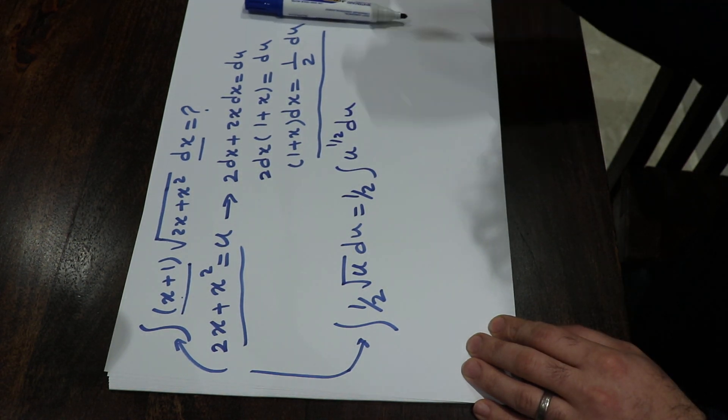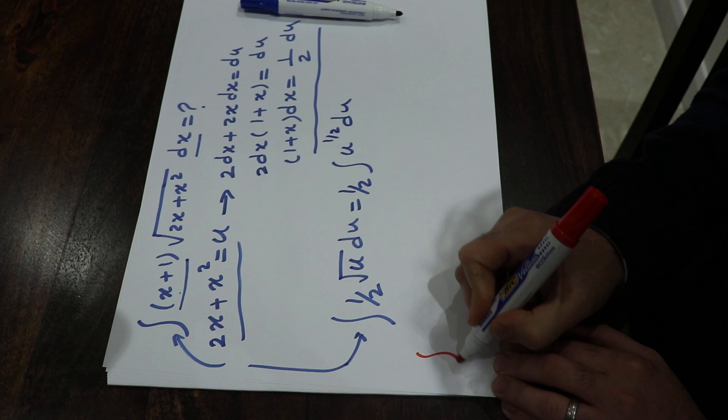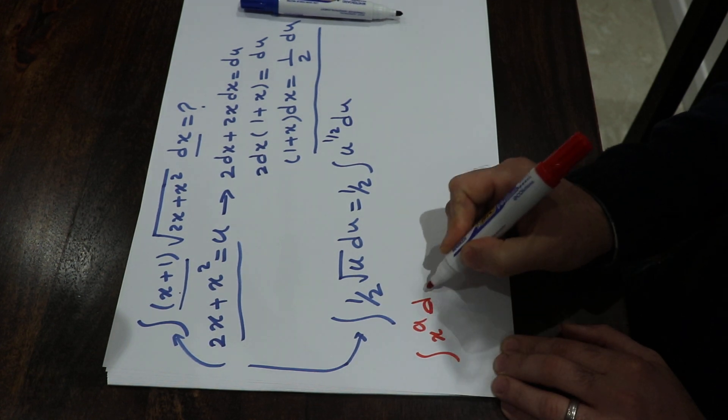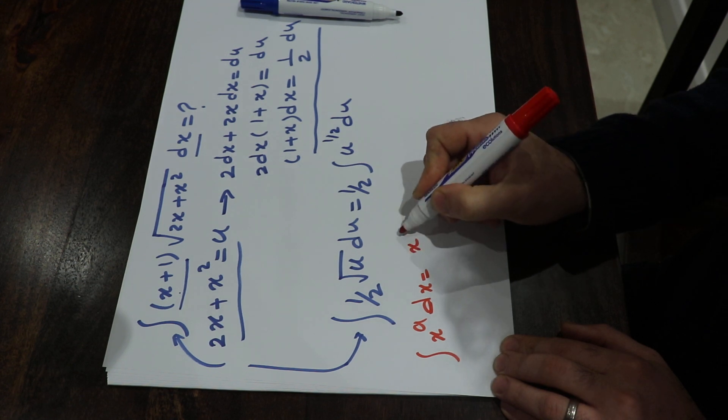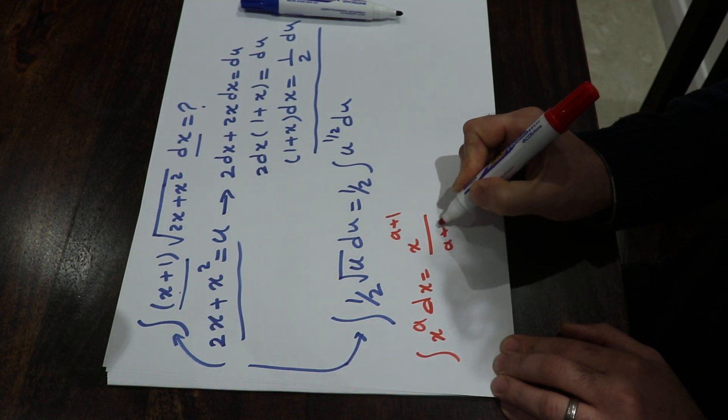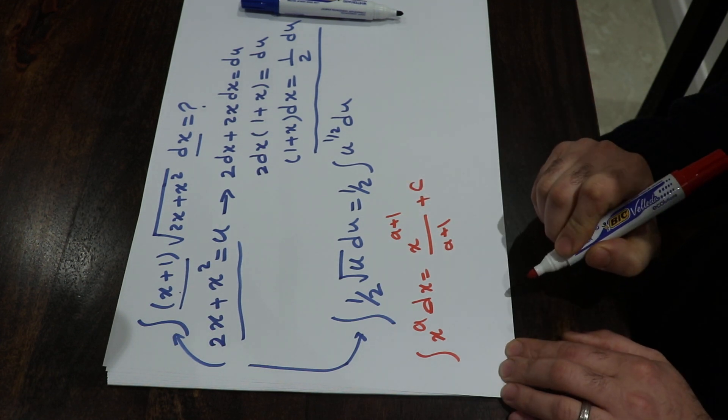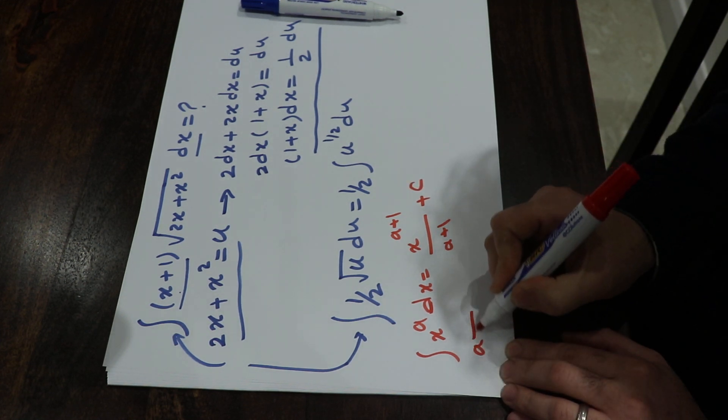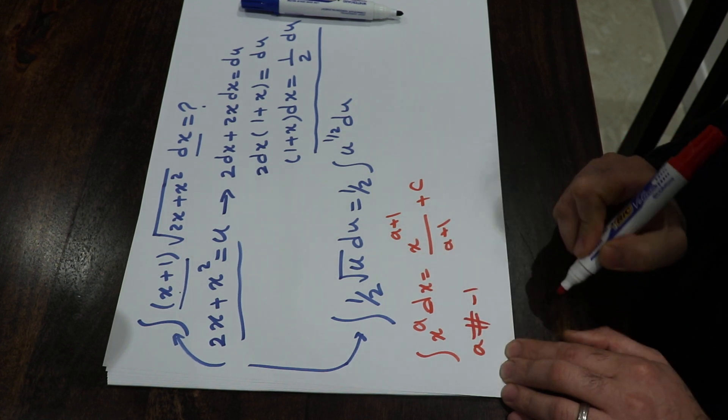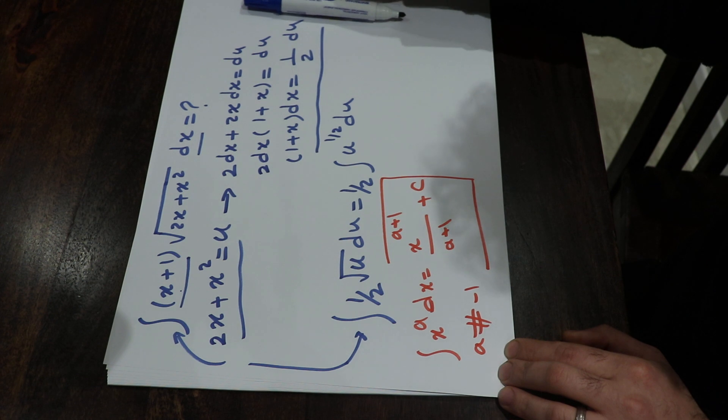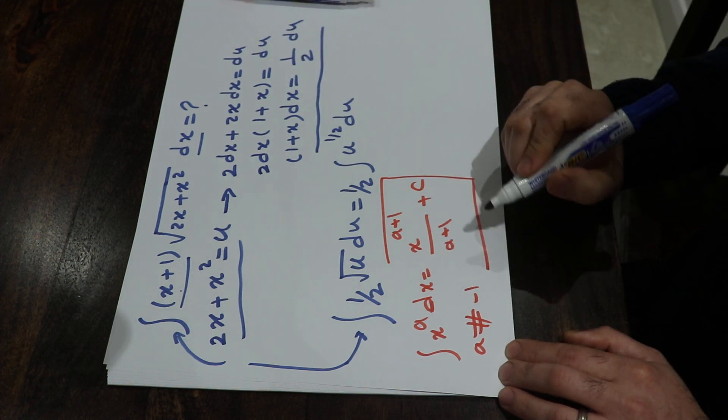To solve this integral, you need to know one formula. That is, integral x with the power of a dx is equal to x with the power of a plus 1 divided by a plus 1 plus c. That's the constant of the integral, assuming a is not equal to minus 1. So this is the formula that you need to know to be able to solve this integral.